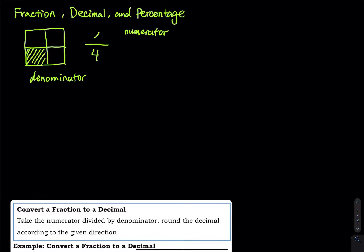Since I grab one piece, that will be one divided by four. One over four simply means one divided by four, which is equal to 0.25. So this one is a fraction, and this number is a decimal.